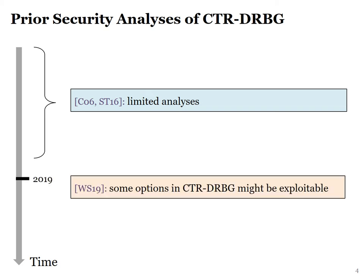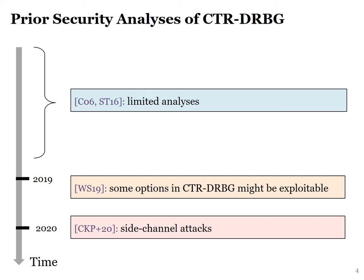In 2019, Woodard and Shumel pointed out that some options in the overly flexible specification of Counter-DRBG might be exploitable. Shortly after, their theoretical observation was confirmed by the work of Carney et al., which gives a side-channel attack on real-world implementations of Counter-DRBG.